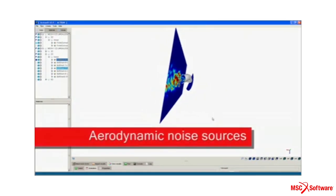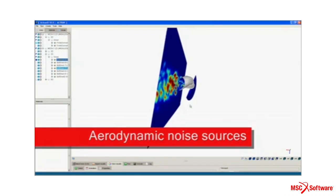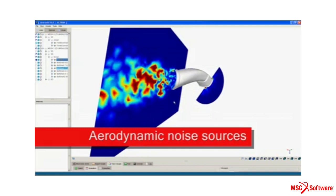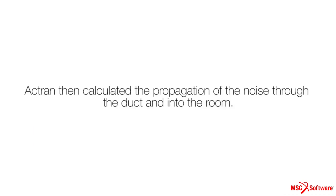This view shows a cut plane of the noise sources. Because the speed of the flow was very low in this case, we neglected the convective effect caused by the flow. When needed, ACTRAN analyses can include the effect of mean flow.